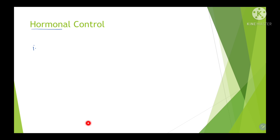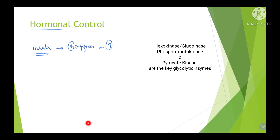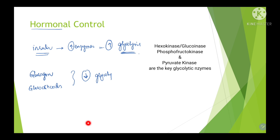Coming to hormonal control: insulin mainly increases the production of key glycolytic enzymes, thereby increasing the rate of glycolysis. Glucagon and glucocorticoids mainly decrease the glycolysis pathway. This is how regulation of the pathway occurs by hormonal control.